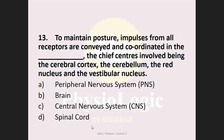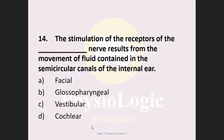MCQ number 13: To maintain posture, impulses from all receptors are conveyed and coordinated in blank — the chief centers involved being the cerebral cortex, the cerebellum, the red nucleus, and the vestibular nucleus. Option A: peripheral nervous system, Option B: brain, Option C: central nervous system, Option D: spinal cord. The correct answer is Option C — central nervous system.